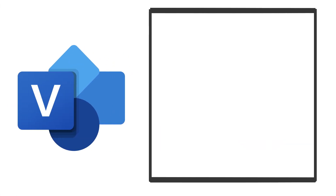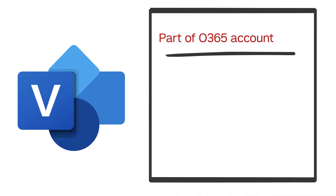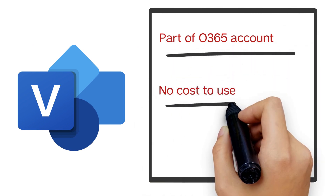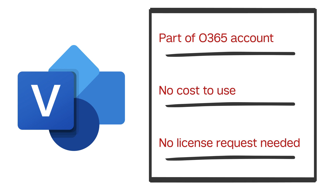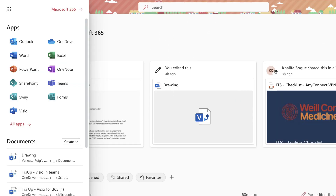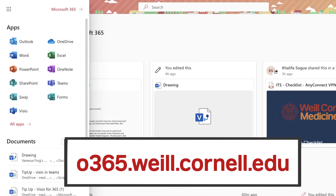The best part is that Visio comes standard in your Weill Cornell Online O365 account, so there's no added cost or license request you need to make. To access Visio, visit o365.weill.cornell.edu and sign in with your credentials and password.